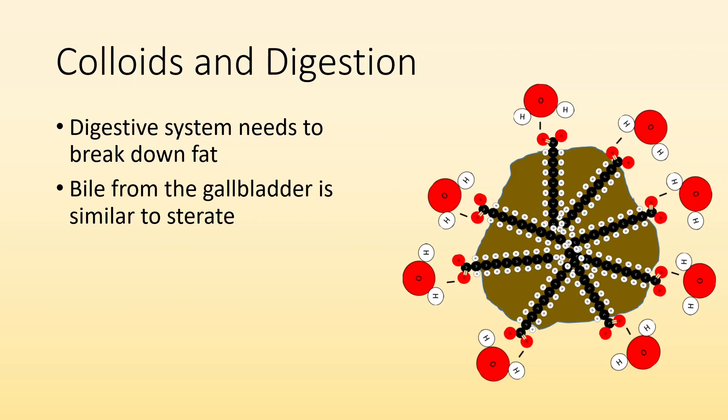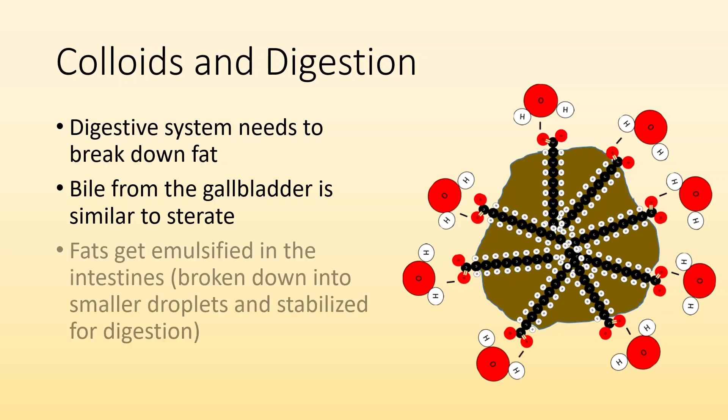So bile is going to help emulsify and break apart those fat particles so that they can then be broken down and digested. So instead of having this huge ball of fat, bile is going to break it up into smaller little droplets, suspend it in our digestive system so that it can be digested.